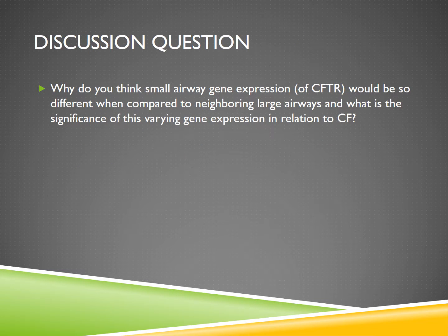That leads to my first discussion question: why do you think small airway gene expression of CFTR would be so different when compared to neighboring large airways? And what is the significance of this varying gene expression in relation to CF?